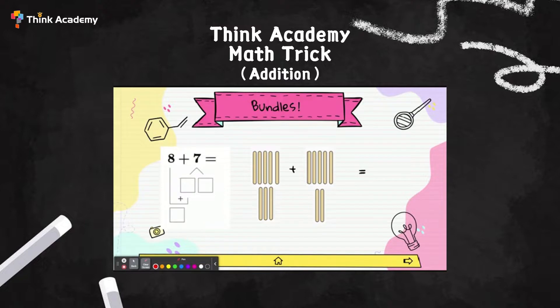8+2 will give you a bundle of 10. So I have 8 and 2 altogether, that will be a 10, my nice round number 10.